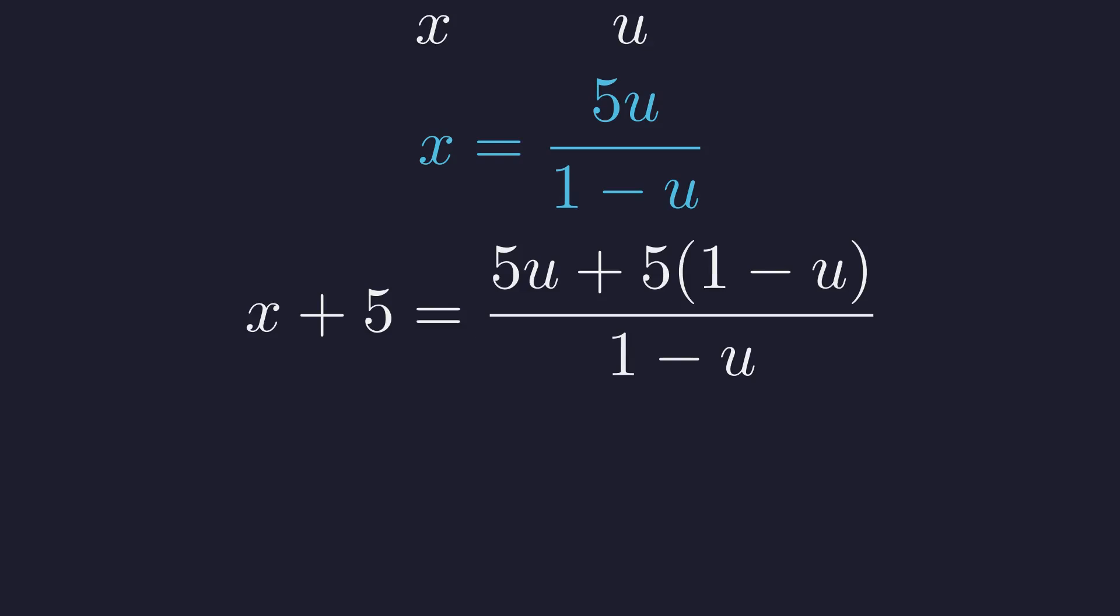We use a common denominator to merge the constant term. This expands to 5u plus 5 times the quantity 1 minus u. The u terms cancel out, leaving a remarkably simple expression: 5 over 1 minus u.